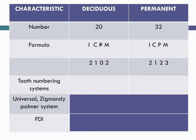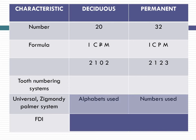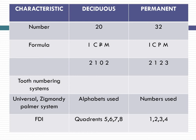When you look at tooth numbering systems, the three predominant systems are the Universal, Zsigmondy-Palmer, and the FDI system. The Universal and Zsigmondy-Palmer systems use alphabets A, B, C, D, E to represent the incisors, canine, and molars in deciduous teeth. In the Universal system we start from A to 20 alphabets, beginning from the upper right quadrant going down to the lower right quadrant. For permanent teeth we use numbers 1 to 8 in each quadrant. The FDI system uses numbers 1 to 8 for permanent and 1 to 5 for deciduous teeth.